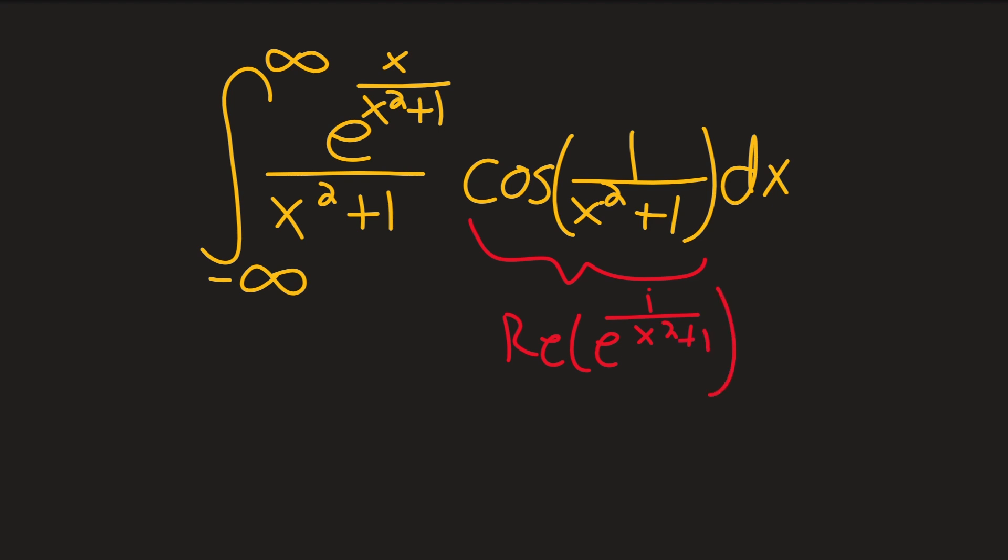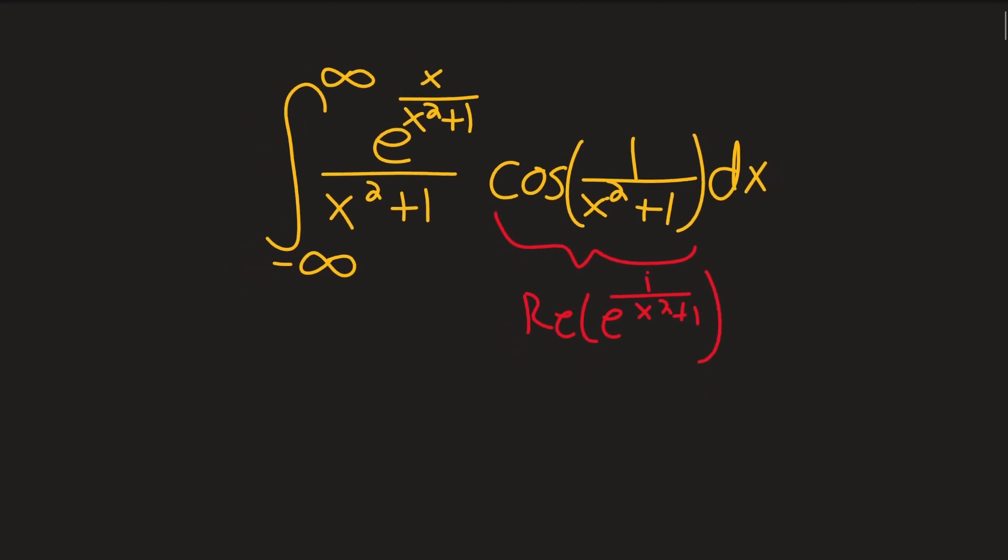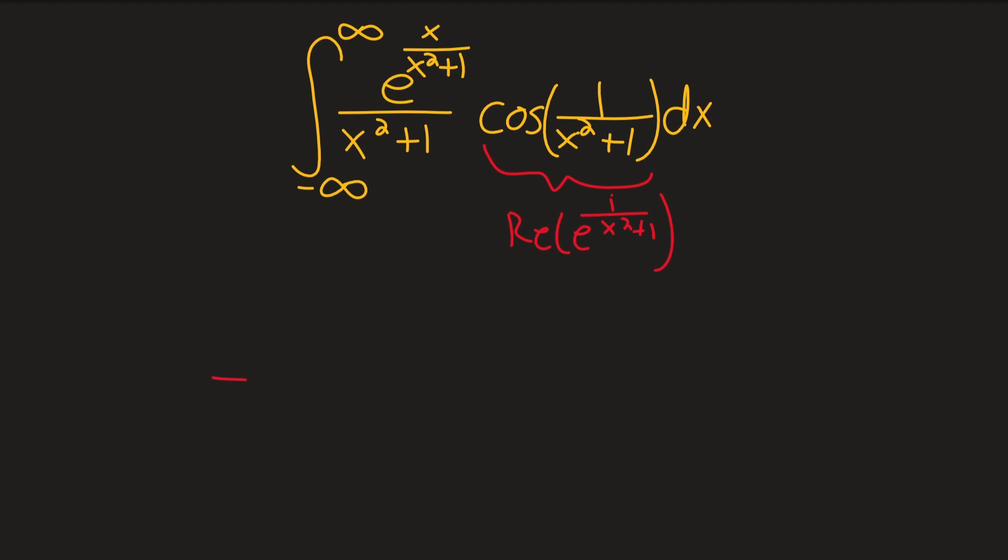So one way we can rewrite our integral then is just as the real part of the integral over all real numbers of e to the (x+i) over x² + 1. Let me move that e down a little bit actually, I don't want to get confused, or confuse the viewers I should say. And then our denominator has not changed, it's still just x² + 1.